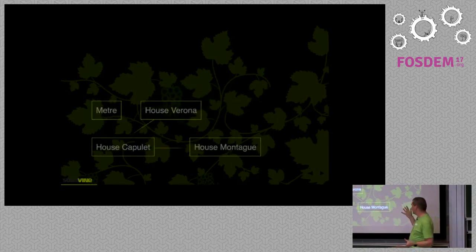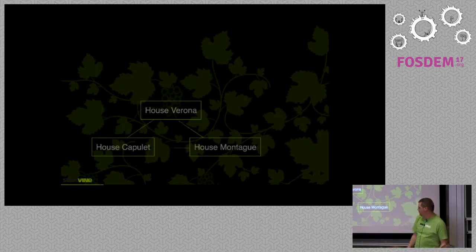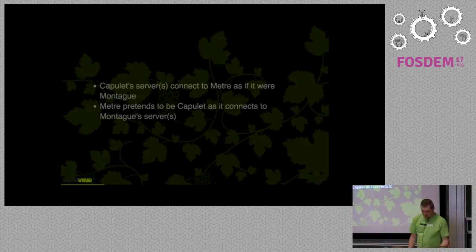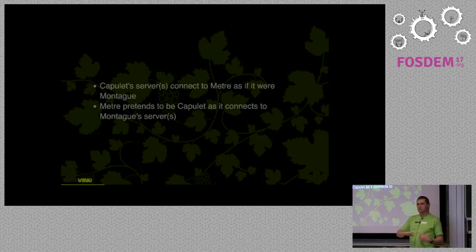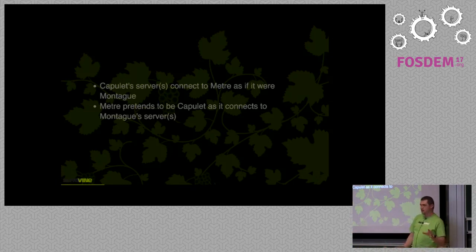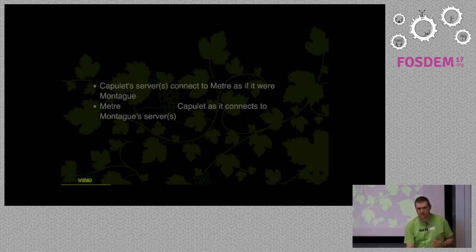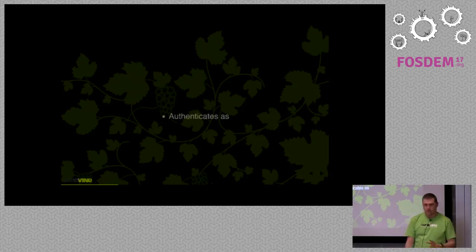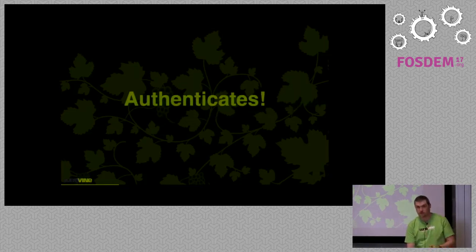Where does Meter fit in the diagram? Well, it kind of doesn't change the diagram — Meter lives in these lines, in these boxes; it acts as the border, as the perimeter. Capulet servers connect to their Meter instance as if it's Montague — they don't really care, they're just connecting out. OpenFire and Prosody both have overrides to let you do this very simply. Meter then authenticates as Capulet as it connects to Montague servers, legitimately acting that way.